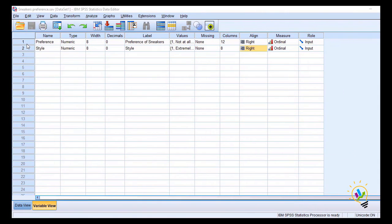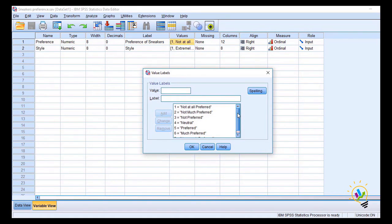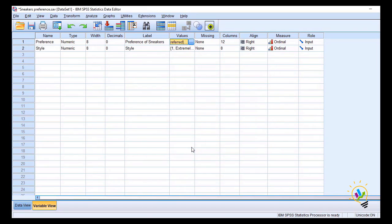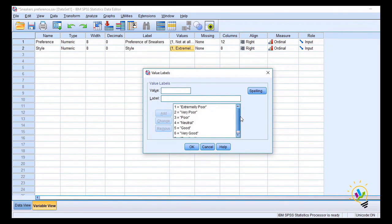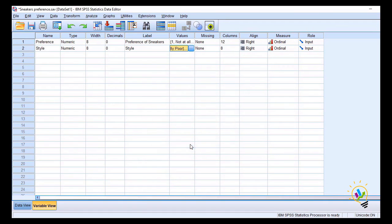In this SPSS file, two variables are there: preference and style. Preference is a Likert scale from one to seven, and the measurement is ordinal. The second variable is style—this is also Likert scale, one to seven, and the measurement is ordinal.